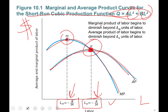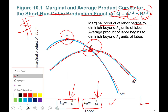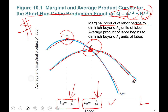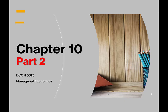Marginal product of labor begins to diminish beyond L_m units — that is where diminishing marginal product sets in. Similarly, average product of labor begins to diminish beyond L_a units. We will learn how to derive these points in part two, where we will continue with the properties of the short-run cubic production function.